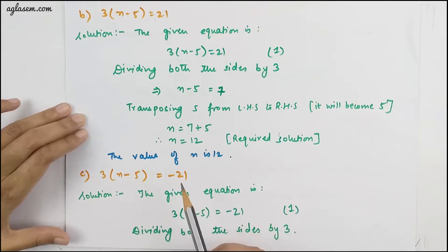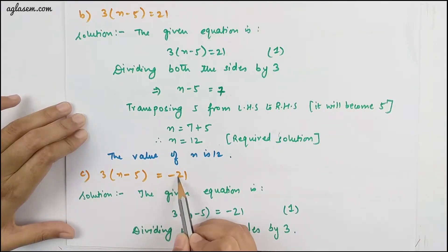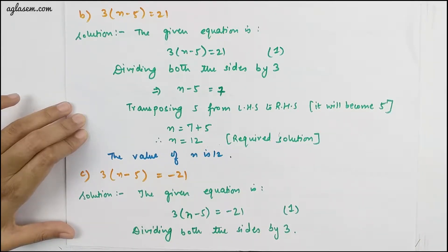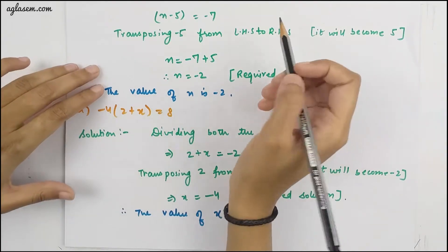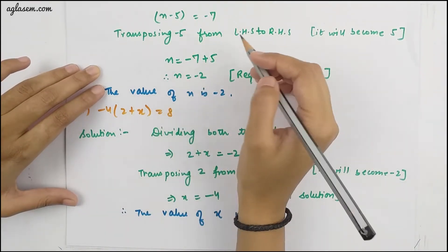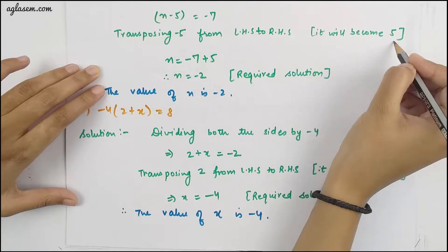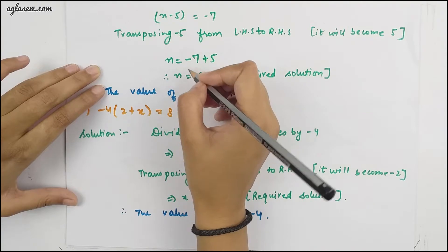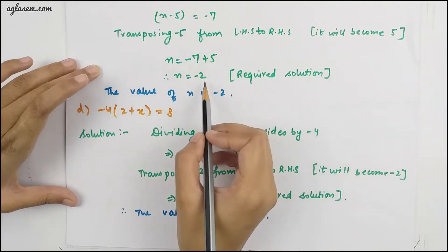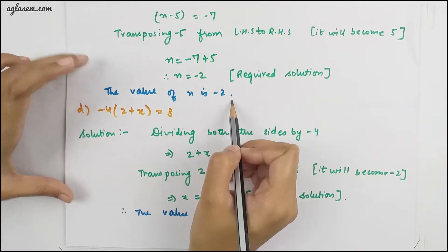The C part is 3n − 5 = −21. Dividing both sides by 3, we get n − 5 = −7. Transposing −5 from LHS to RHS, it becomes +5. From there, we have the value of n = −2. Therefore the value is −2.